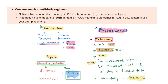For treatment: in native valve endocarditis, give vancomycin plus a beta-lactam. In prosthetic valve endocarditis, add gentamicin and rifampin — so the combination is four medications: vancomycin, beta-lactam, gentamicin, and rifampin.